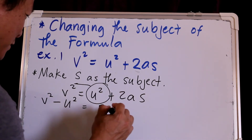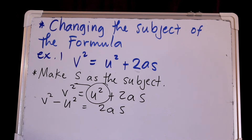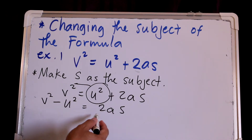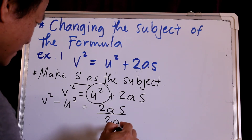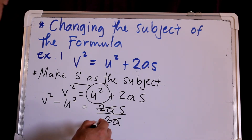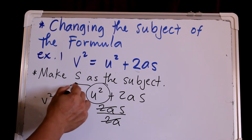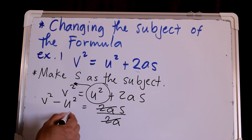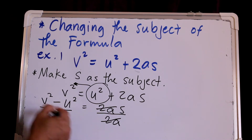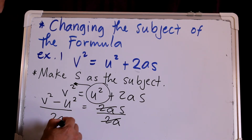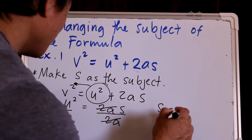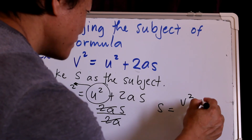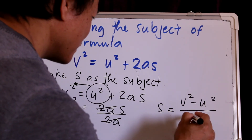Then you have plus 2AS remaining. Since 2A is being multiplied, we divide both sides by 2A. So we can remove 2A from the right side.